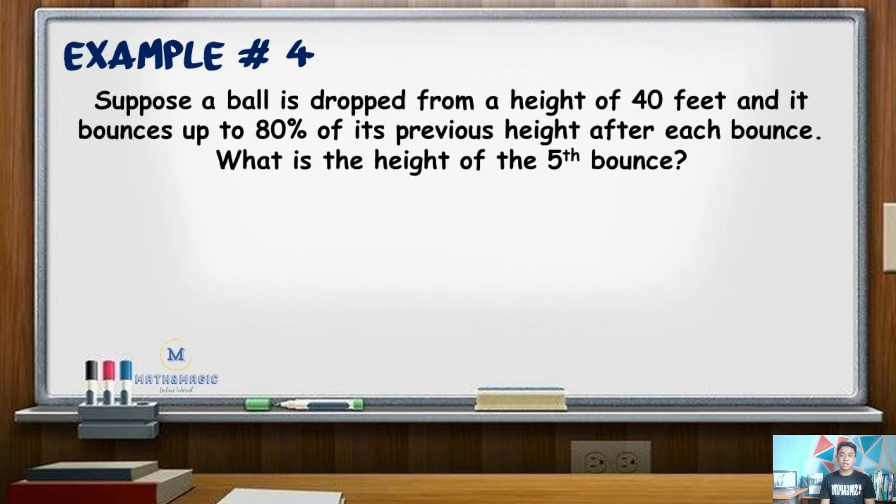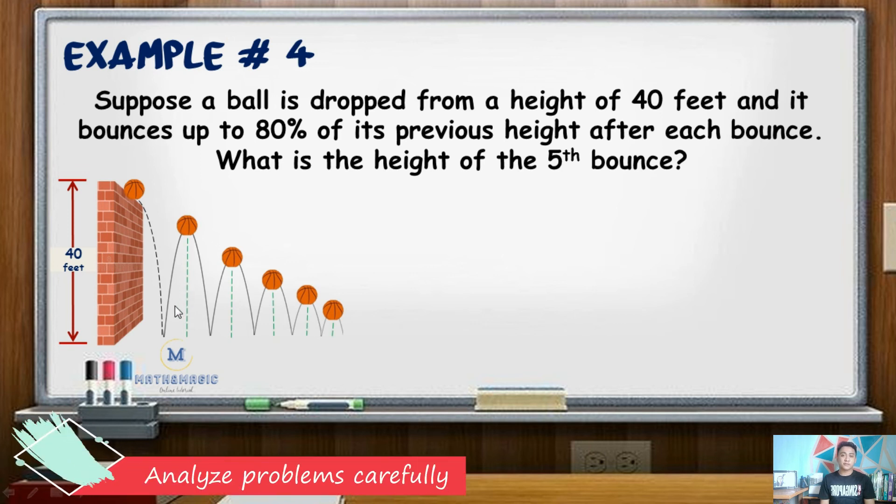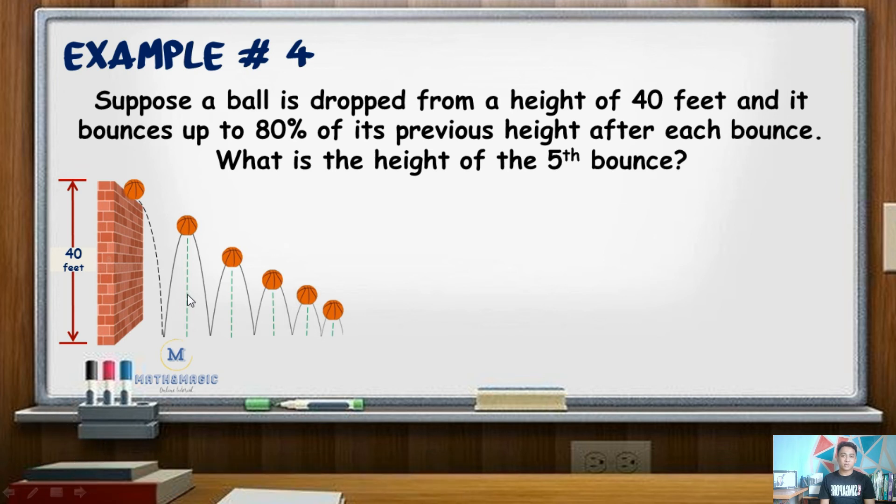For our last example, suppose a ball is dropped from a height of 40 feet and it bounces up to 80% of its previous height after each bounce. What is the height of the 5th bounce? Here we are looking for h sub 5 being the 5th bounce height. We cannot consider 40 as a sub 1 because that is not a bounce height. Getting 80% of 40, that is 32. Hence, the first term for this item is 32.